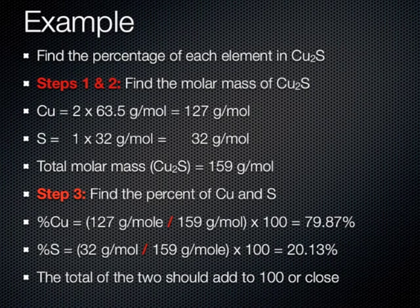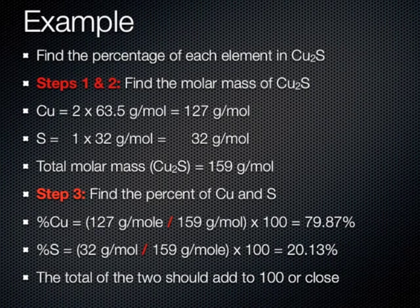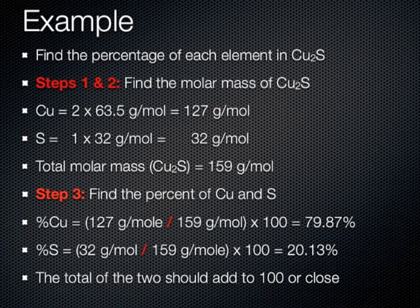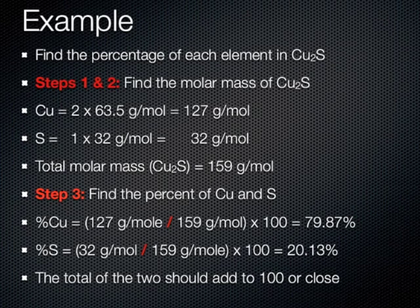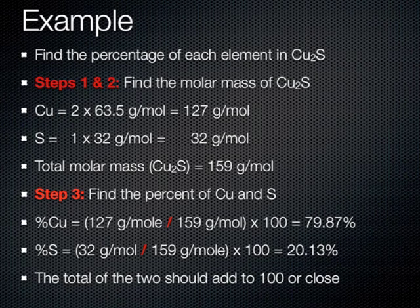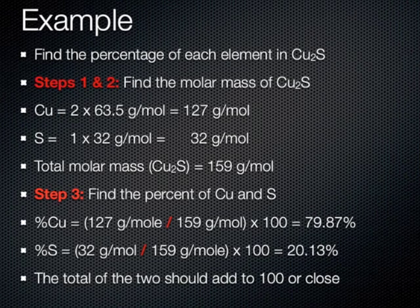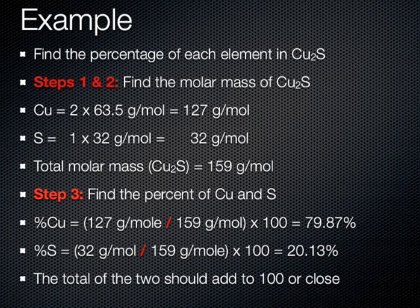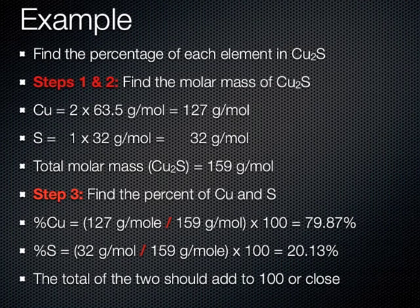So, first, copper has two atoms of it at 63.5 grams per mole for 127 grams per mole total. Sulfur, there is one at 32 grams per mole for a total of 32. The total mass of the copper sulfide, then, is 159 grams per mole.